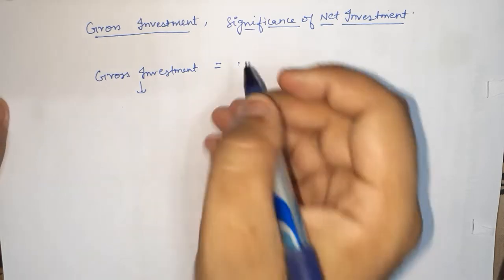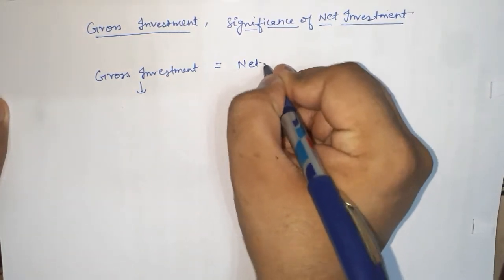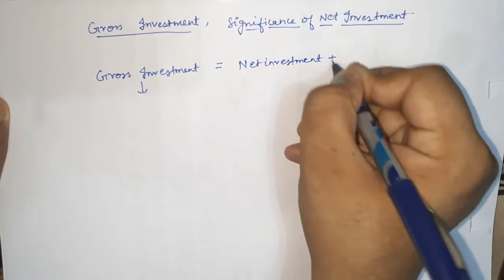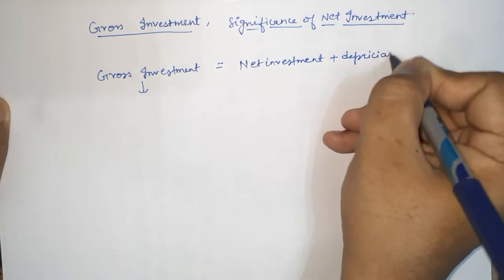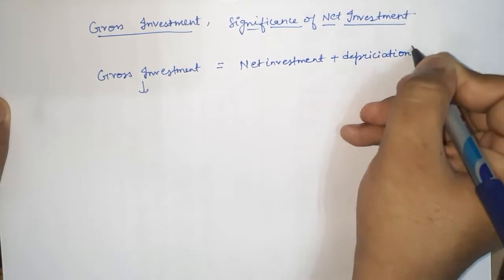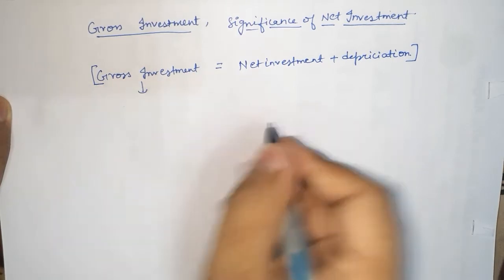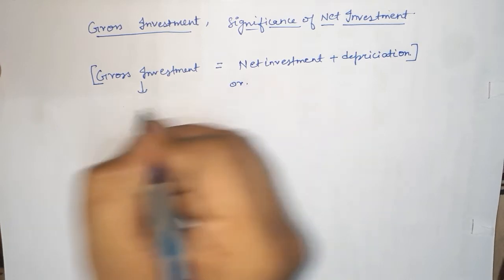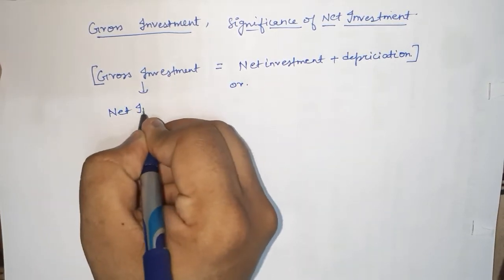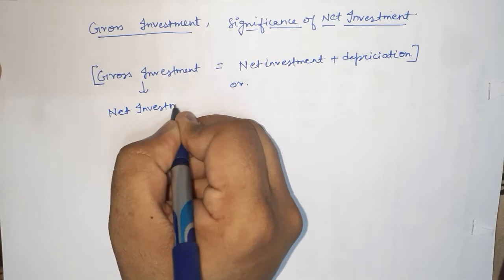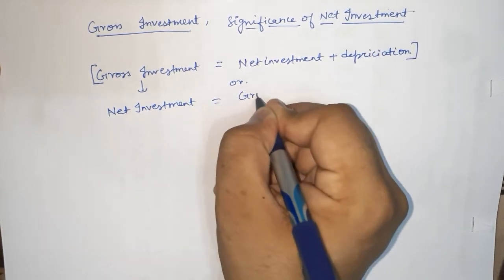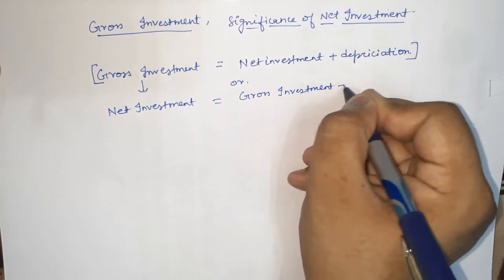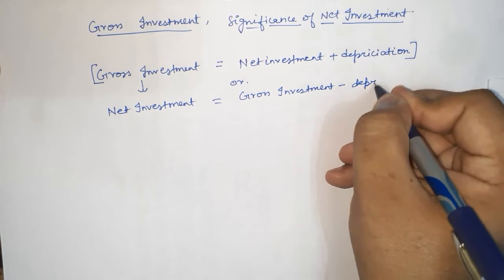Gross investment is equal to net investment plus depreciation. This is the relation. And one more way to say it: net investment is equal to gross investment minus depreciation.